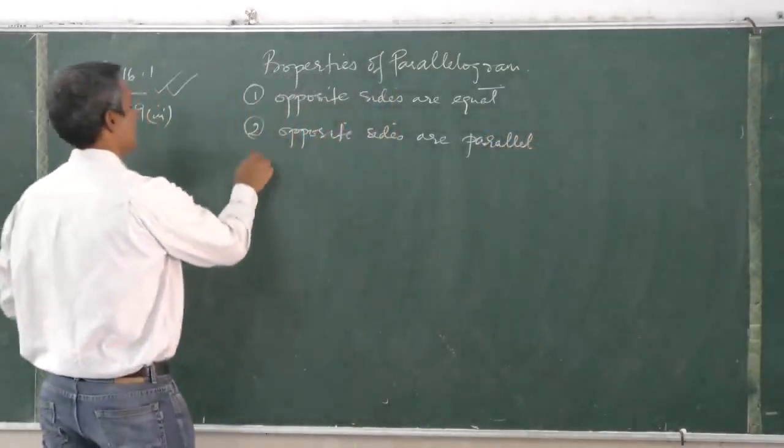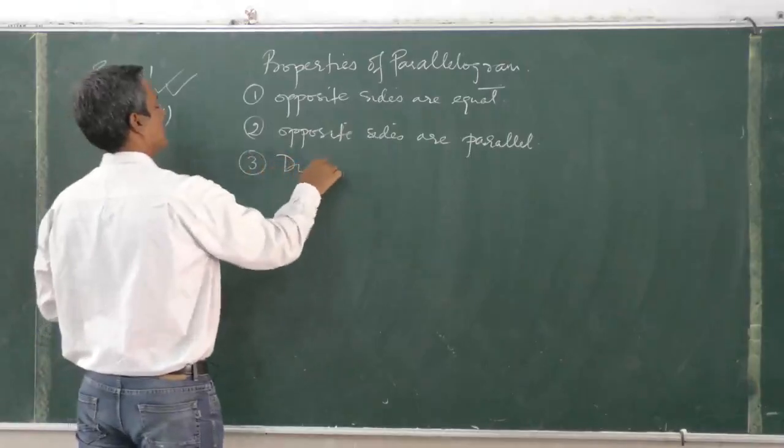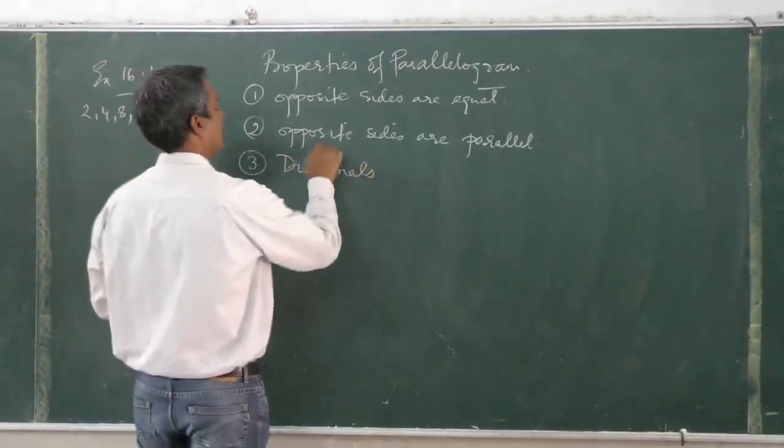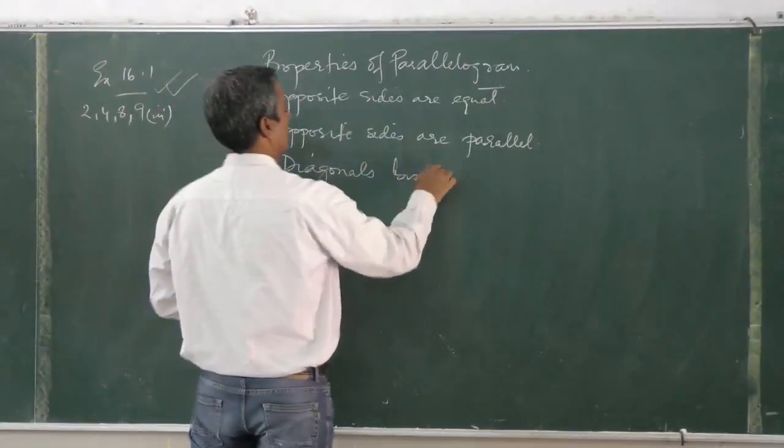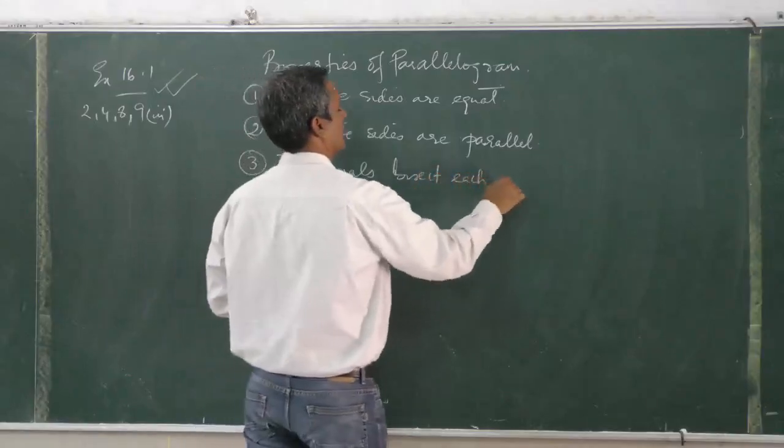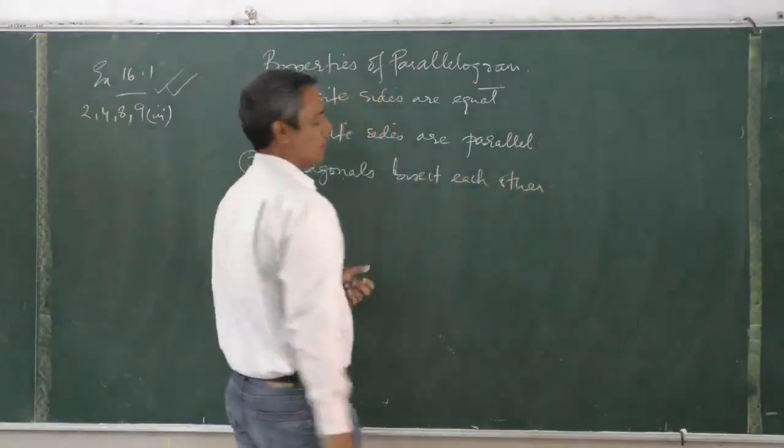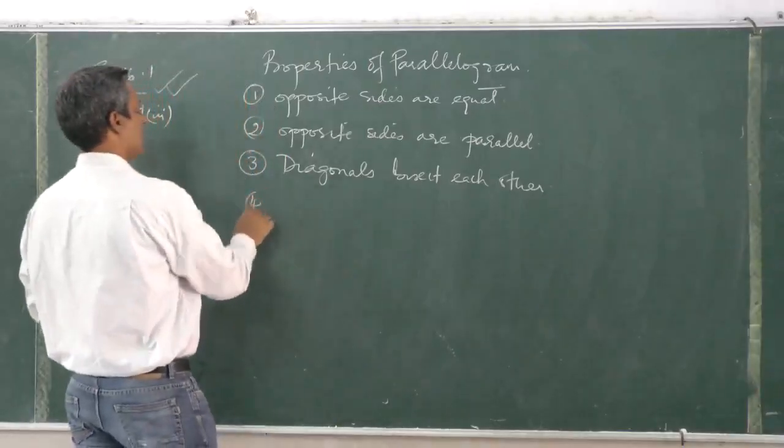In parallelograms, diagonals bisect each other and opposite angles are equal.